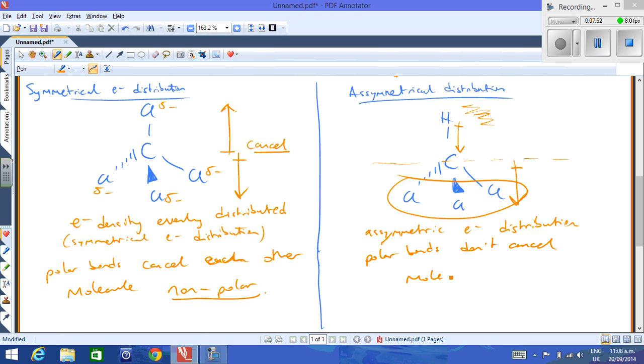The polar bonds don't cancel. And therefore, the molecule overall will be polar. So you can represent that with one large arrow, which is separate for the molecule itself. And the overall molecule is polar. Whereas the CCl4 is nonpolar. And that's a good example of how to discuss whether a molecule is polar or nonpolar.